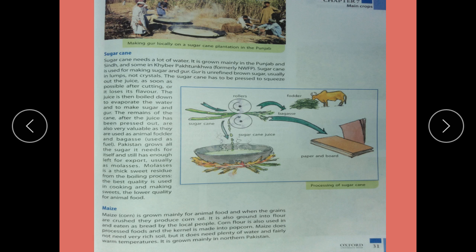Gur is unrefined brown sugar, usually in lumps, not crystals. The sugar cane has to be pressed to squeeze out the juice. The juice is released as soon as possible after cutting, otherwise it loses its flavor. The juice is then boiled down to evaporate the water and to make sugar and gur. The remains of the cane after the juice has been pressed out are also very valuable, as they are used for animal food and as fuel.